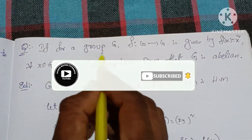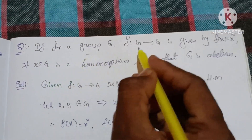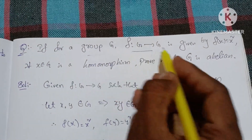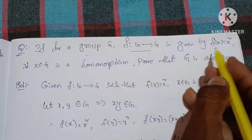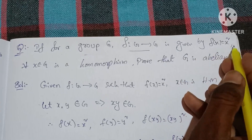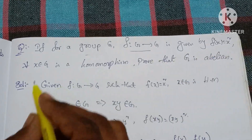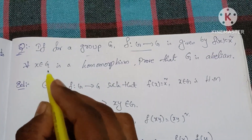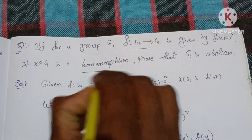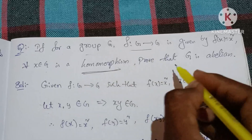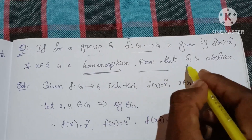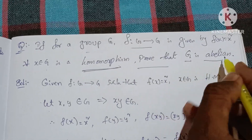For a group G, f from G to G is given by f(x) = x² for all x belonging to G. This is a homomorphism. Prove that G is abelian.